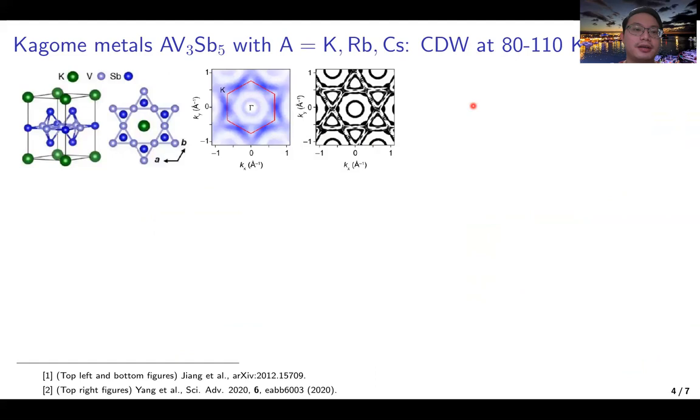This question may be answered by looking at a recently uncovered kagome metal, AV3Sb5. Here, the alkali atoms realize a triangular layer, the antimony atoms realize a honeycomb layer, and the vanadium atoms realize a kagome layer. The band structures have been obtained by ARPES and DFT computations. Interestingly, there is a hexagonal Fermi surface, which arises from the vanadium kagome layers.